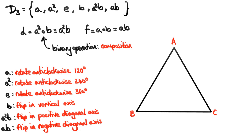So now we have our set D3 and our binary operation, composition. But that's not all we have to do — in order to check whether these two together really form a group, there are still four conditions to check before we can say that this pair, the set and the binary operation, are a group. Those are closure, associativity, identity, and inverse. But we'll leave that for the next video.